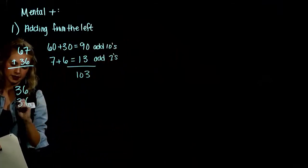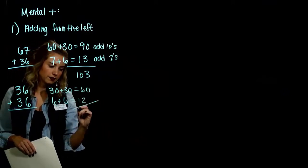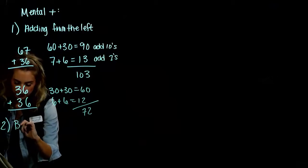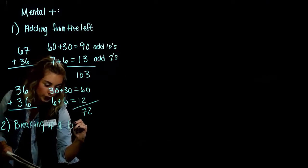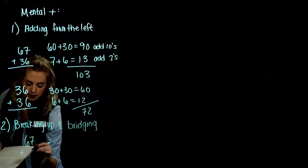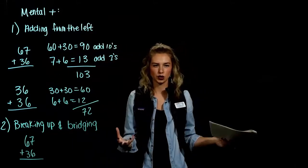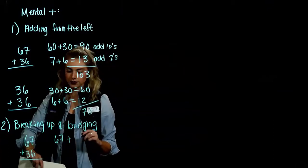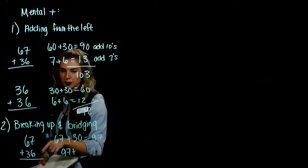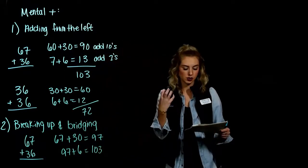For 36 plus 36: double 30 gives 60, double 6 gives 12 — total 72. Another method is breaking up and bridging. For 67 and 36: combine 67 with the tens value 30 to get 97. Then add the remaining 6 units to get 103. We break it into larger chunks and combine them, arriving at the same answer.